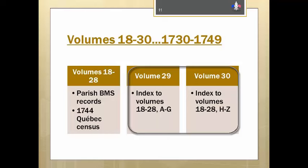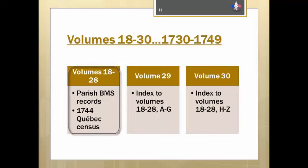In the 1730–1749 grouping, you would begin with the general index in volumes 29 and 30, or the individual parish indexes. Besides the baptisms, marriages, and burials for the period 1730 to 1749, Volume 18 contains the sick lists and census of 1744 for Quebec, and the Montreal sick list is in Volume 24.